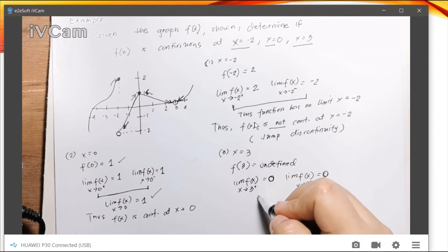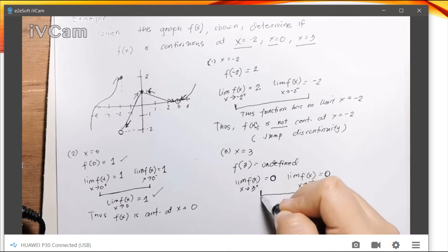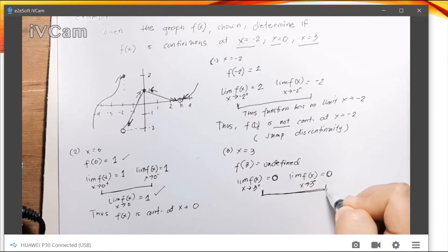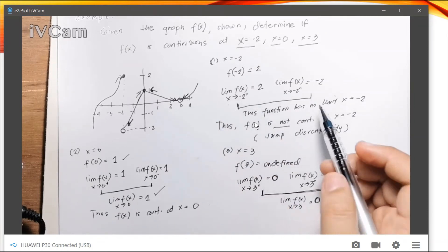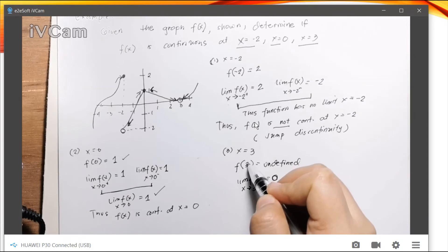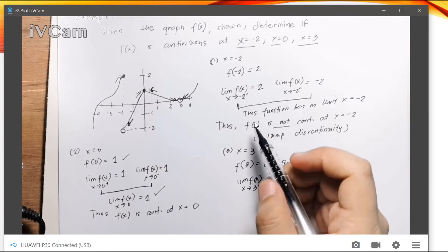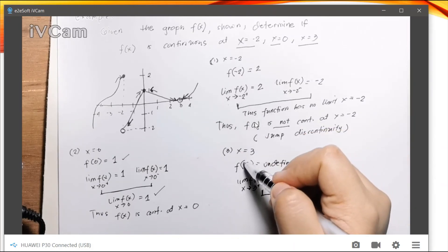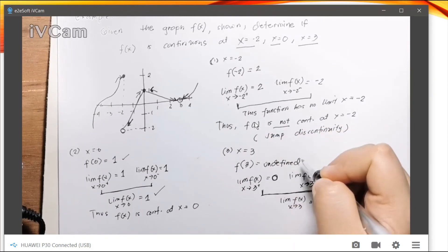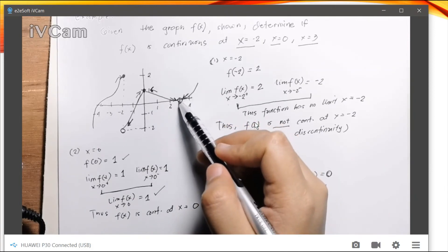we say that our f of x also approaches 0 as our x approaches 3. So since both of them are equal, the same limit, and also the same value of the limit from both directions, we say that this has the limit of 0. So this function has a limit at x equals 3. However, there's no value at f equals 3, no value at x equals 3 rather. So since there's no value at x equals 3, that's why there's a hole in the graph.